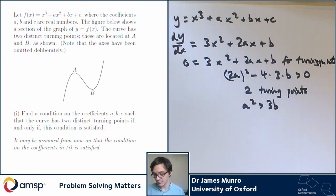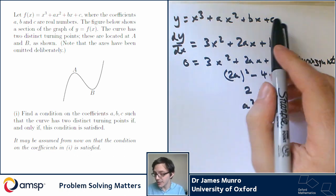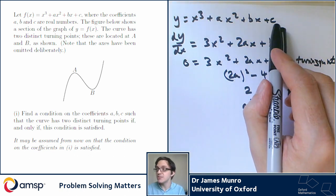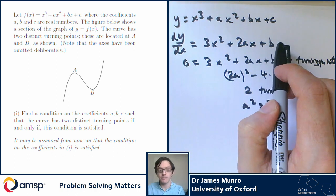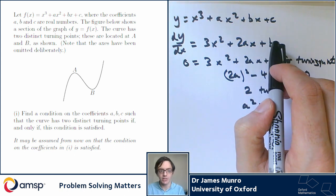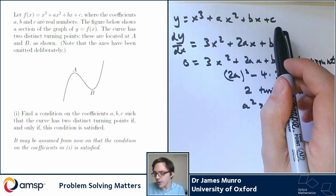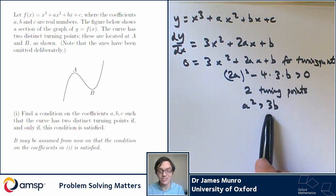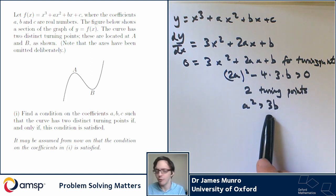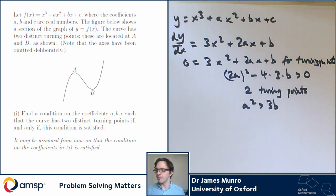I can simplify this a little bit to say something like a squared bigger than 3b. That's my condition in terms of a, b, and c to have two turning points — and I suppose it doesn't involve c at all. That makes sense: changing c just moves the cubic up and down and won't change how many turning points it's got. It's worth saying that this does count as a condition in a, b, and c, even though c doesn't appear in it.